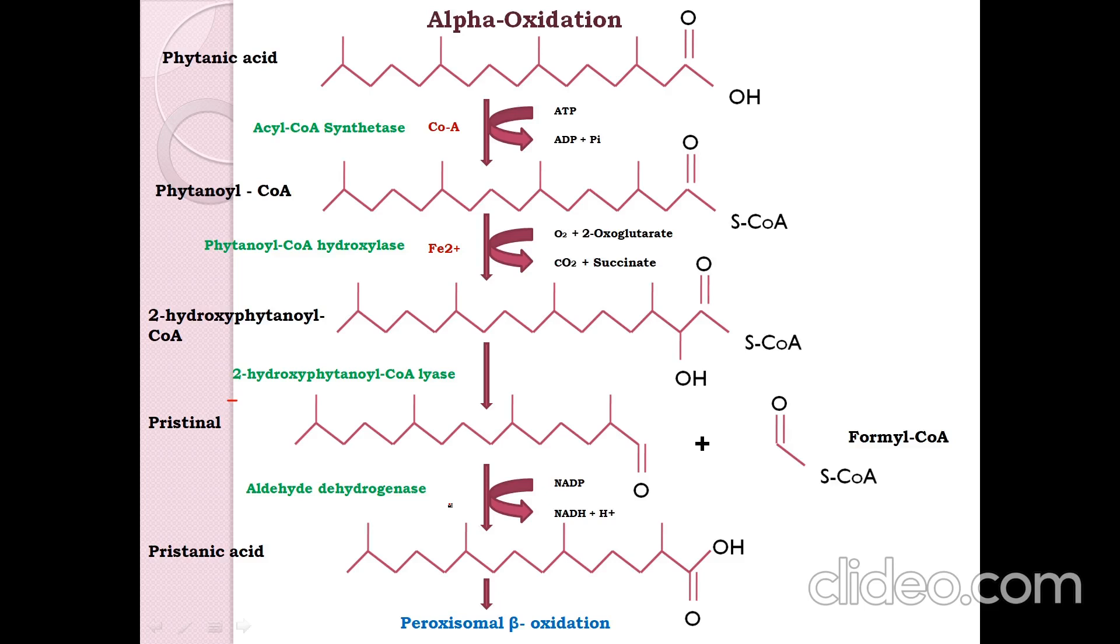This is about alpha oxidation which further enters into mitochondrial beta oxidation. Therefore, alpha oxidation is a very important oxidation in the catabolism of branched chain fatty acids, and you can also say it is a methylated fatty acid. And this is associated with Refsum's disease.